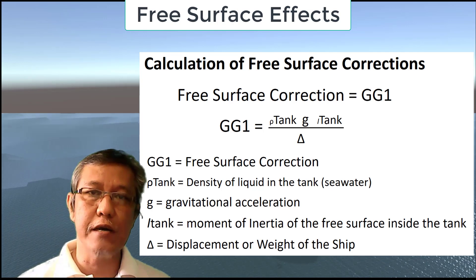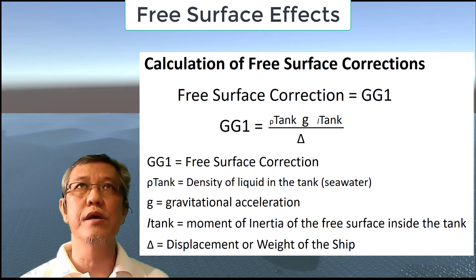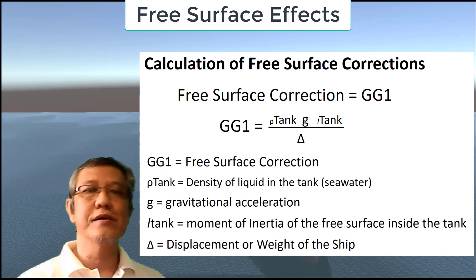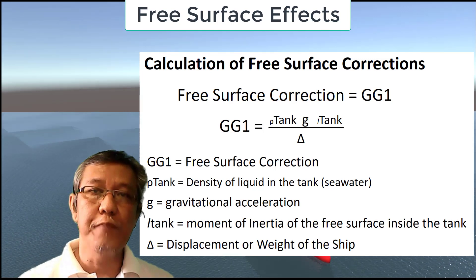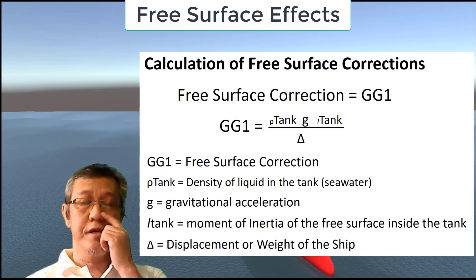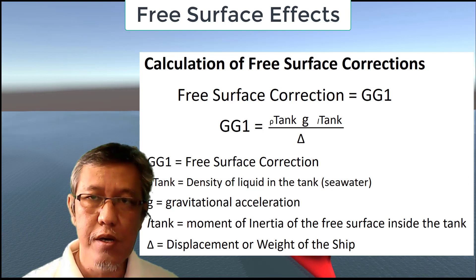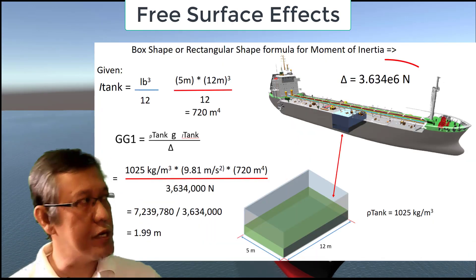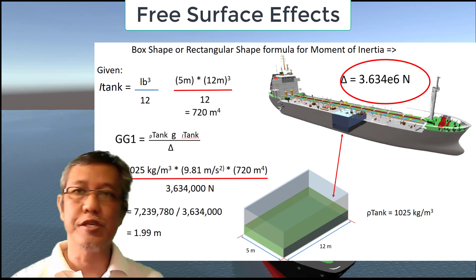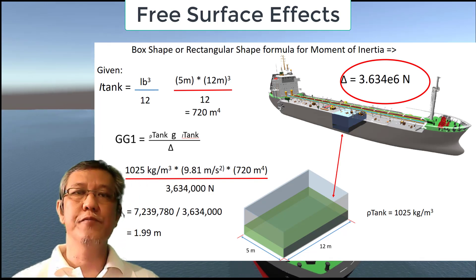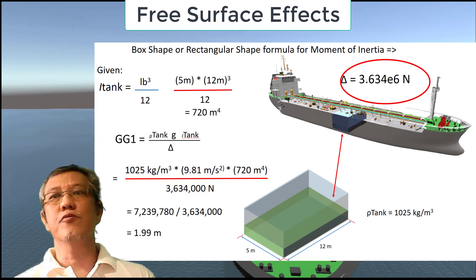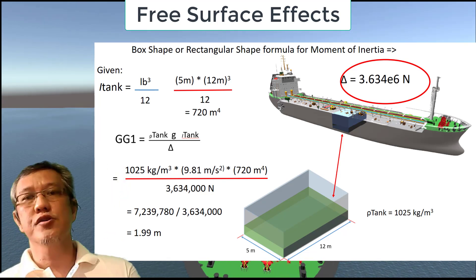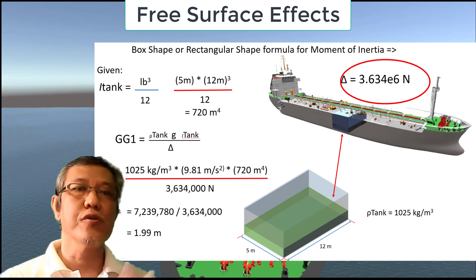G is the gravitational acceleration, which is 9.81 meters per second squared, while I is the moment of inertia of the free surface inside the tank. It's divided by the displacement, or weight of the ship. Now let's assume that the weight of the ship is about 3.634 times 10 to the sixth power. With that formula, 5 meters times 12, and 12 multiplied to the power of 3 and divided by 12, is about 720 meters to the fourth. So we now have the so-called inertia of the tank.